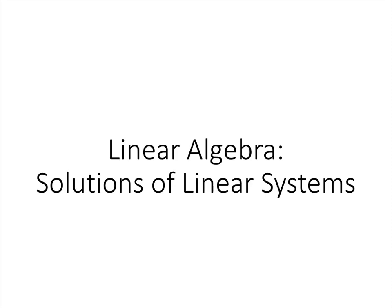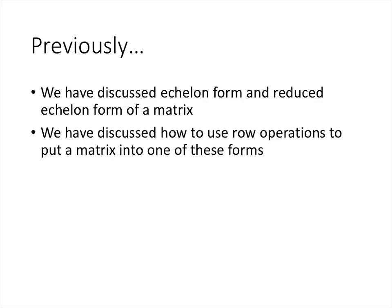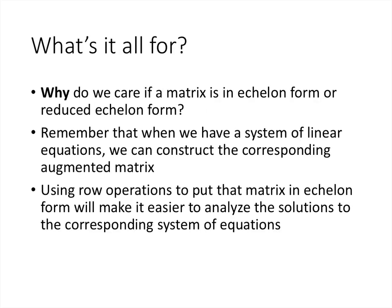In this video we'll talk about how we use matrices and echelon forms to talk about solutions to linear systems. In the last couple of lectures we've talked about echelon form and reduced echelon form, and we've also talked about how to use row operations to put a matrix into one of those forms. But now we need to think about why we care if a matrix is in echelon form or reduced echelon form. When we have a system of linear equations we can construct the corresponding augmented matrix, and then using row operations to put that matrix in echelon form will make it easier to analyze the solutions to those systems of equations.